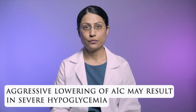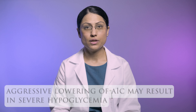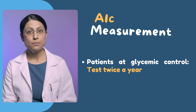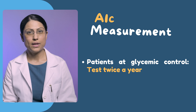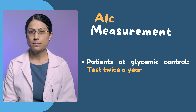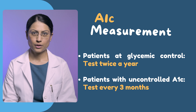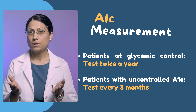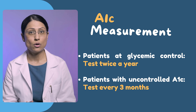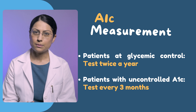Aggressive lowering of A1c may result in increased risk of severe hypoglycemia and may lead to higher mortality. In patients who are at their glycemic control, the American Diabetes Association recommends measurement of A1c at least twice per year. More frequent testing every three months may be required in patients whose glucose is not under adequate control or when there are changes in management.